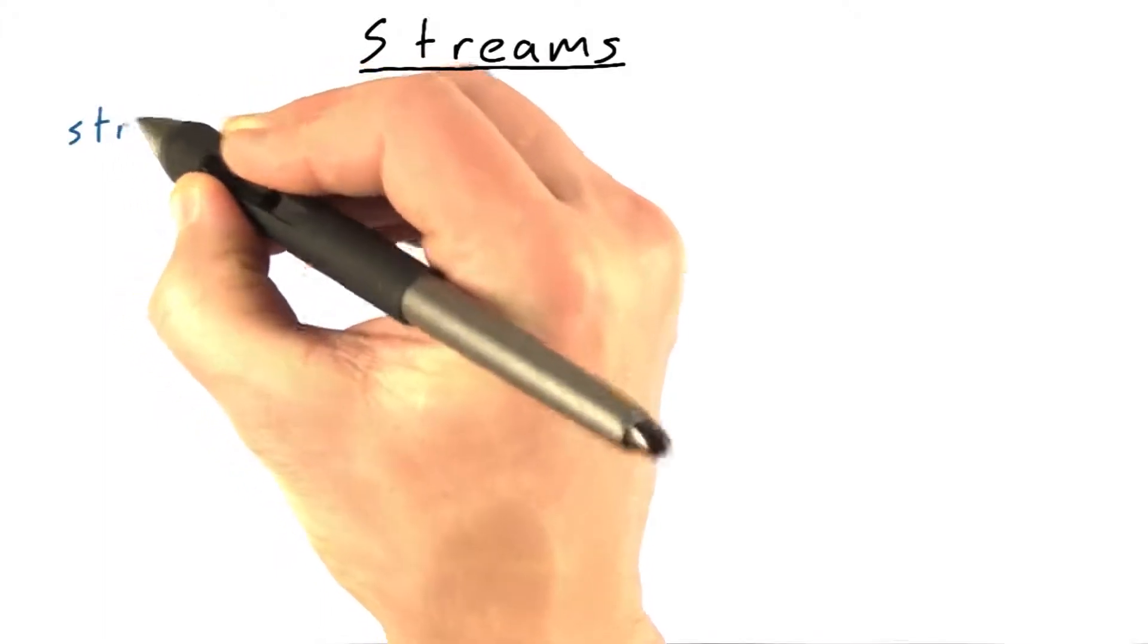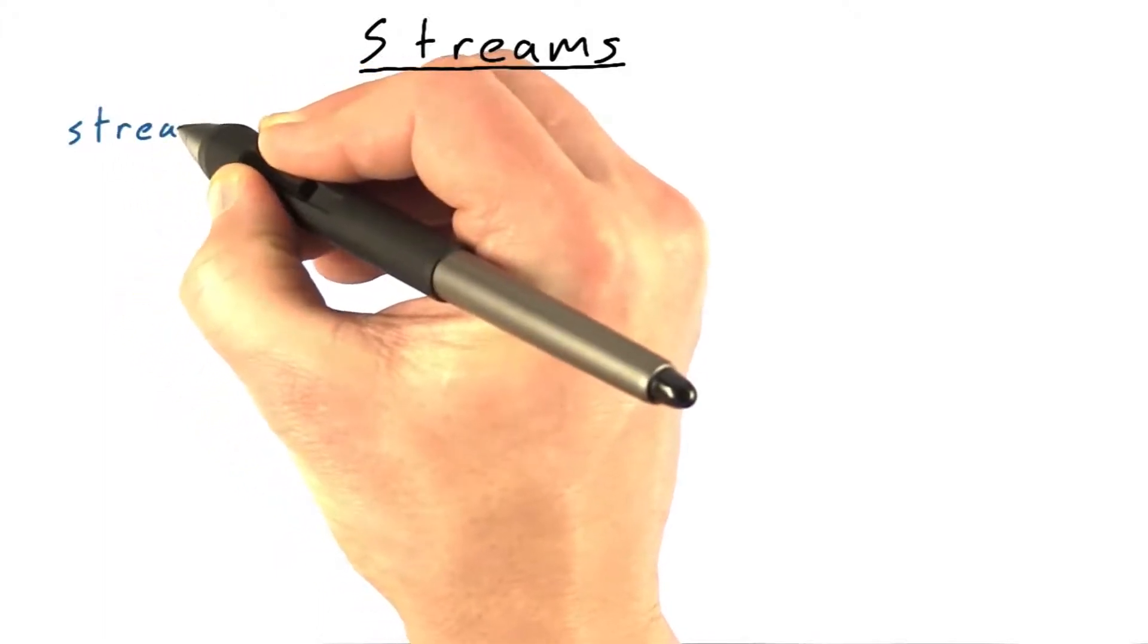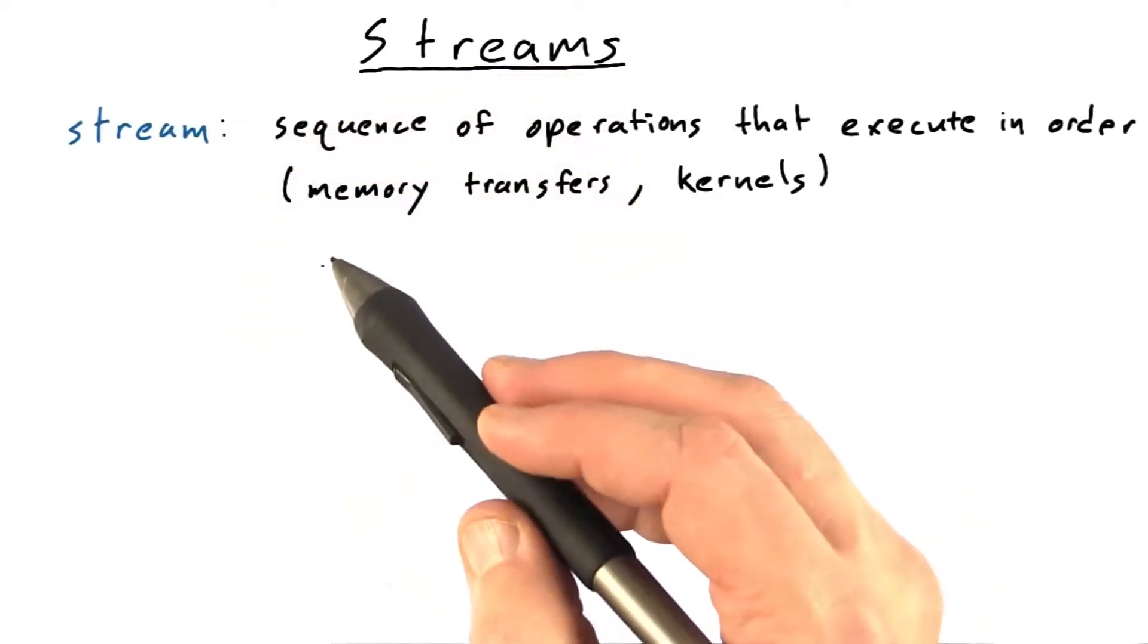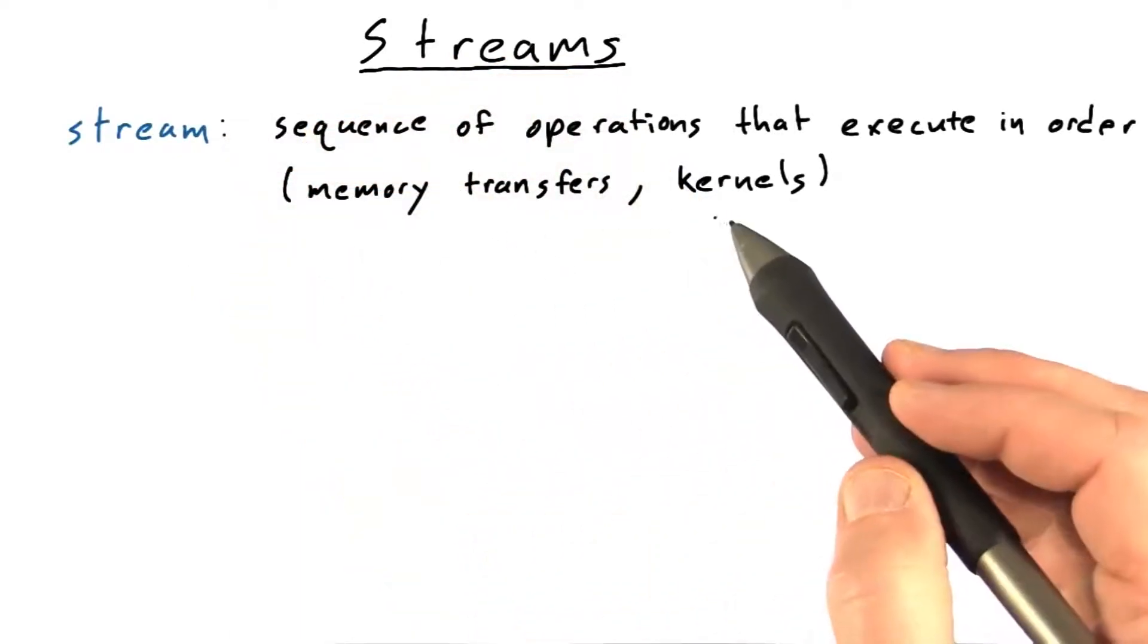So in CUDA, a stream is a sequence of operations that will execute in order on the GPU. And the particular operations we care about are memory transfers and kernel launches.